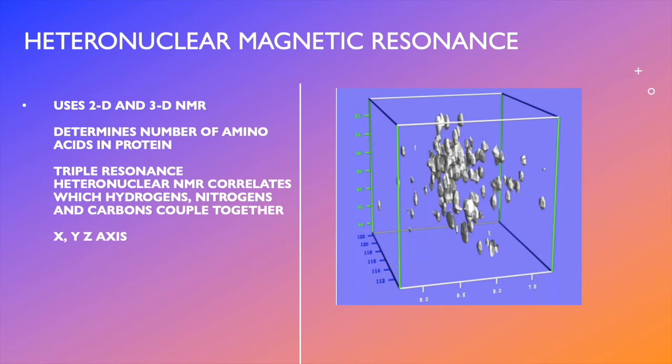However, another dimension can be brought in 3D which also brings the carbon isotope. Bringing in another dimension leads to triple resonance heteronuclear NMR spectrum. Now one dot will correlate to the coupling between a hydrogen, nitrogen, and carbon in one of the residues. This is essential when determining how many amino acid groups are present in the protein. These dots are now on X, Y, and Z axes with hydrogen, nitrogen, and carbon on each axis. Essentially, one dot correlates to one amino acid group.